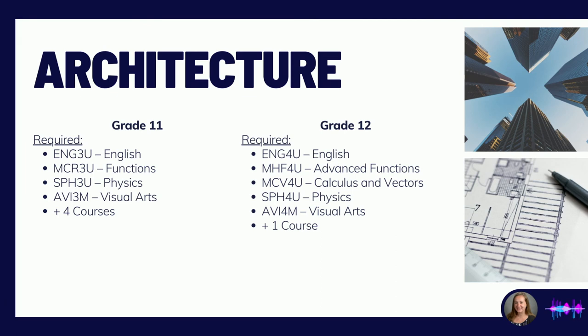Students interested in architecture in grade 11 will need to take English, Functions 11, Physics 11, and Visual Art, in addition to their four elective choices. In grade 12, they'll need to take English, Advanced Functions, Calculus, Physics 12, and Visual Arts 12, along with one additional elective course.